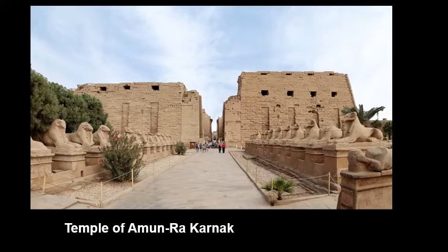There is a hypostyle hall in this temple complex — it's very famous. It contains 134 very large-scale columns, 12 of which are over 70 feet tall. They're huge. It would have been covered, but light was allowed through the building by the use of clerestory windows. We'll talk about clerestory windows later during the Gothic and Romanesque periods in Western Europe, but this is the first time clerestory windows were ever used. They basically leave a gap near the ceiling which allows natural light to filter through and illuminate the entire interior space.